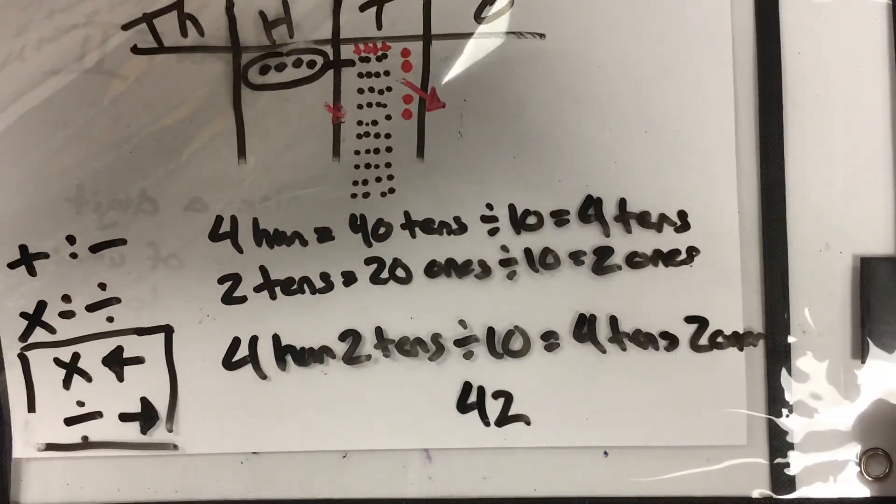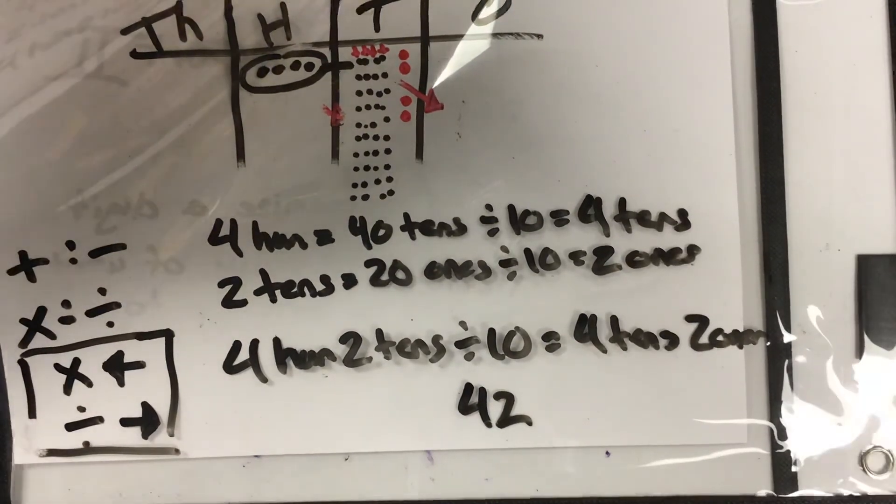So four hundreds and two tens divided by 10 equals four tens and two ones, which equals 42.